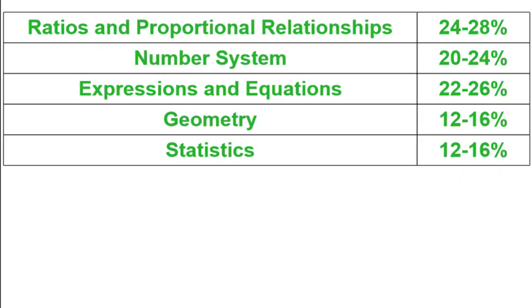The test is divided into five main topics: ratios and proportional relationships, number system, expressions and equations, geometry, and statistics. Each of the first three topics covers around a quarter of your test, and the other two cover about an eighth each. Some topics are a little more important than others, but they also cover more things.